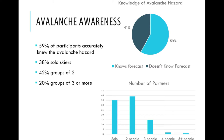We asked people to circle what the forecast level was for the day, then compared that against the actual forecast bulletin from the forest service numbers. Only 59% were able to accurately tell us what the hazard level was for the day — so 40% of our participants didn't know the avalanche hazard for that given day.